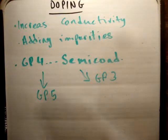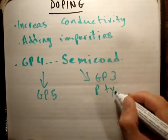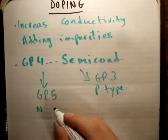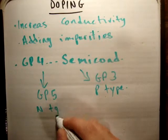If we add group 3 impurities, we get p-type. The majority carrier will be a hole. Group 5 will give us n-type; the majority carrier will be an electron.